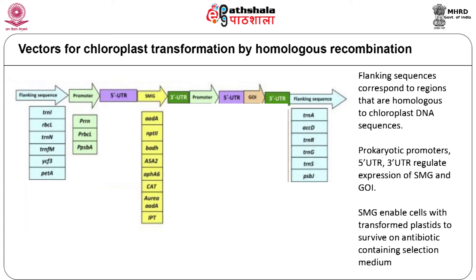Instead of antibiotic resistance genes, which are harmful to chloroplast function, less hazardous markers can be used — for example, the betaine aldehyde dehydrogenase (BADH) gene. This enzyme is present only in chloroplasts of a few plant species. The selection process involves the conversion of toxic betaine aldehyde, added in the selection medium, by the chloroplast BADH enzyme to non-toxic glycine betaine. Rapid regeneration of chloroplast transgenic plants occurred under BADH selection compared to antibiotic selection.